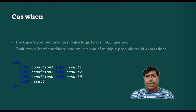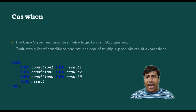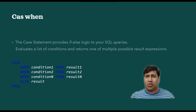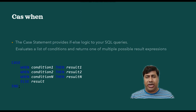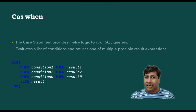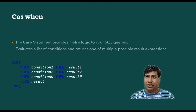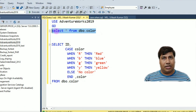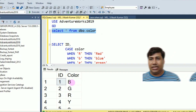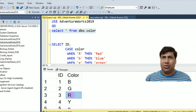The CASE statement provides if-else logic to your SQL query and calculates a list of conditions and returns one of multiple possible result expressions. The syntax is: CASE WHEN condition1 THEN result1, WHEN condition2 THEN result2, ... WHEN conditionN THEN resultN, ELSE result END. In the table 'Color', you can see color names mentioned in short form.